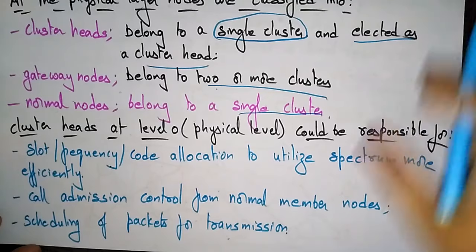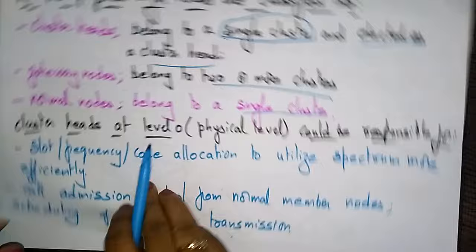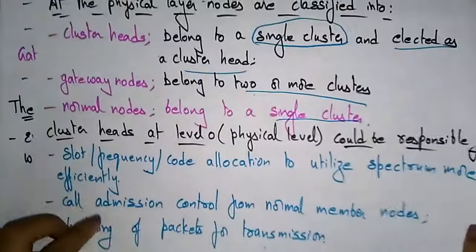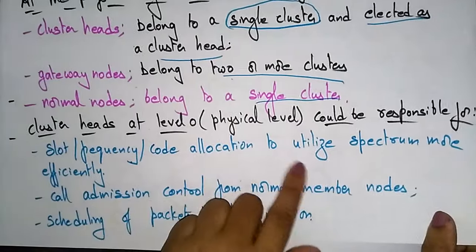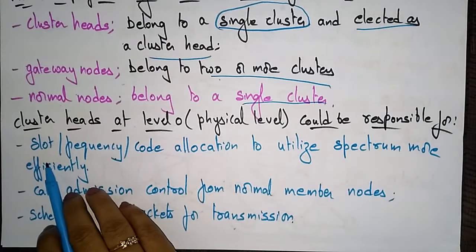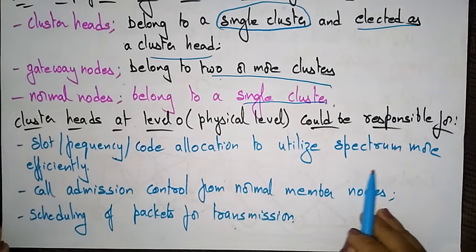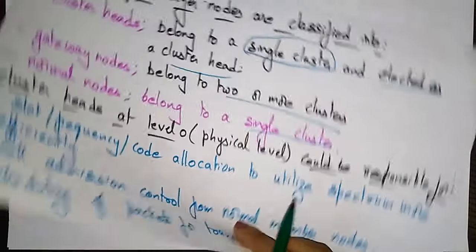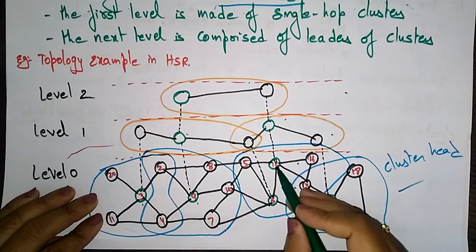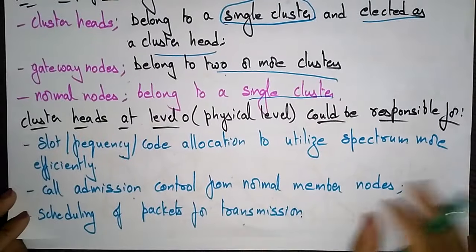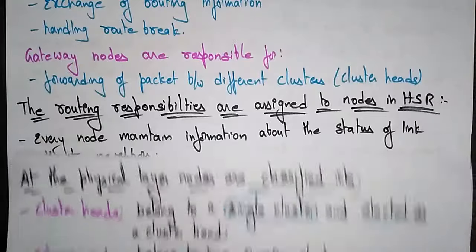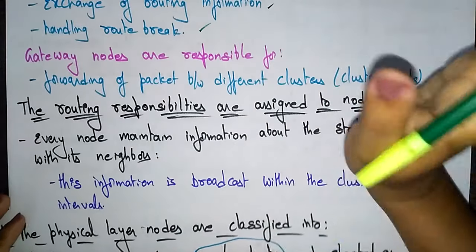The cluster head at level zero, which is the physical level, is responsible for slot, frequency, or code allocation to utilize the spectrum more efficiently, call admission control from normal member nodes, and scheduling of packets for transmission. So nodes like 3, 9, 12, 6, and 17 are the cluster heads, and their role includes call admission control from normal member nodes and scheduling of packets for transmission.